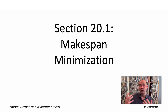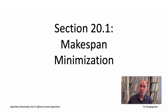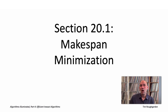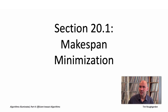So we'll revisit an old algorithm design paradigm, the paradigm of greedy algorithms. Those turn out to be particularly well suited for the design of fast heuristic algorithms, including some that have provable guarantees. We'll also augment your toolbox with a new tool, local search, which often lacks provable guarantees, but is nonetheless extremely effective at tackling a number of different NP-Hard problems in practice.